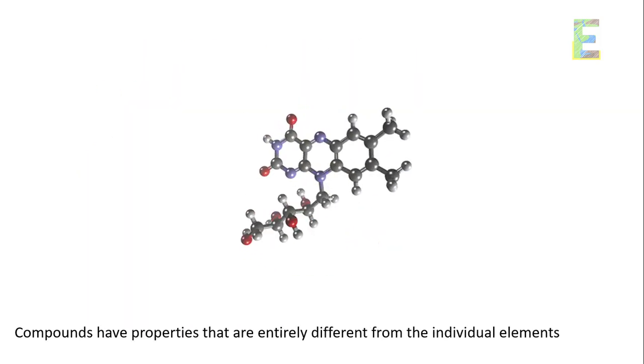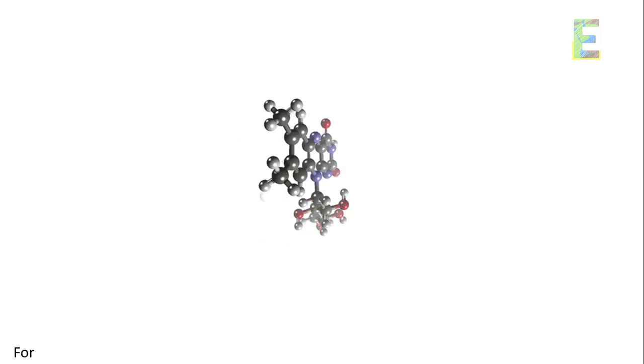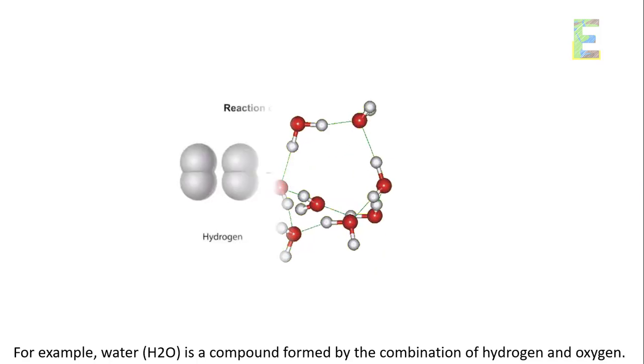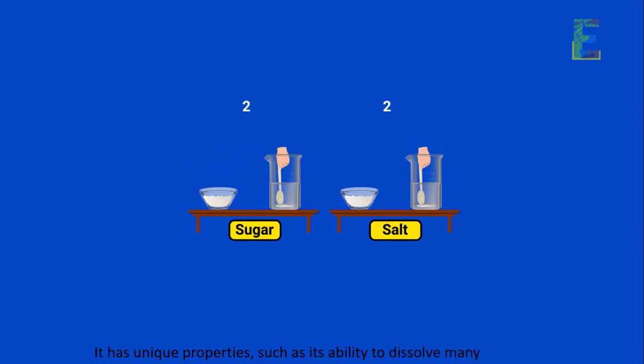Properties of compounds. Compounds have properties that are entirely different from the individual elements that make them up. For example, water, H2O, is a compound formed by the combination of hydrogen and oxygen. It has unique properties, such as its ability to dissolve many substances.